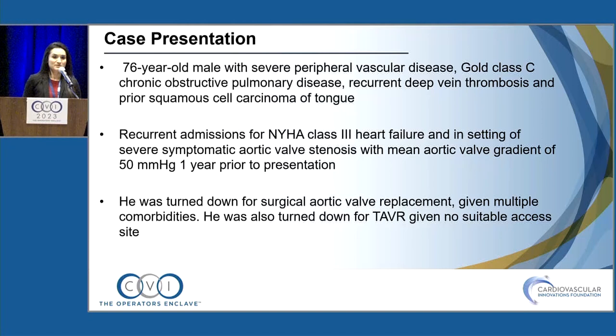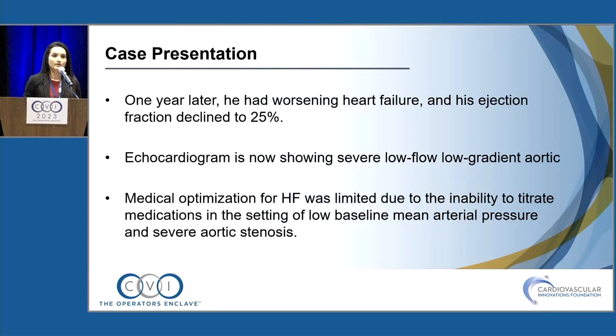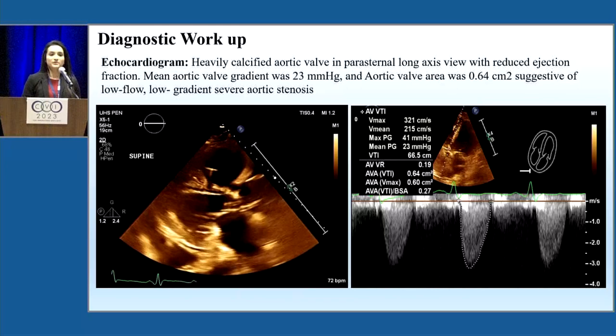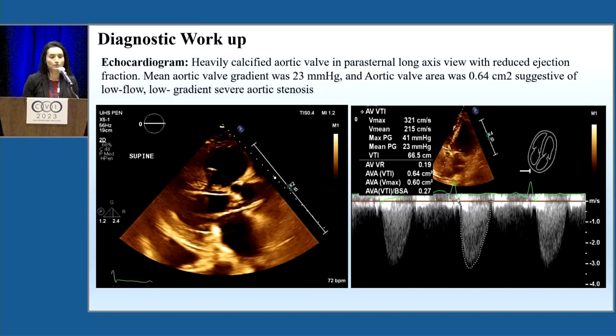Fast forward one year: his EF declined, he has more symptoms, he is unable to tolerate medications, and he came to us for a second opinion. His aortic valve is very calcified, valve area is less than 0.6, and his EF is down — classic low-flow, low-gradient presentation.